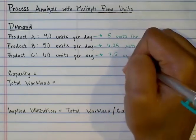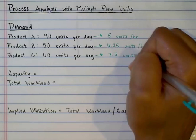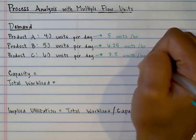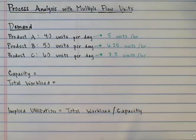Finally, product C has a demand of 60 units per day. 60 divided by 8 is 7.5, so demand is 7.5 units per hour.